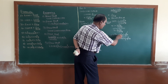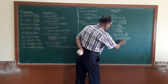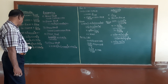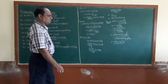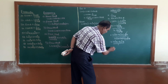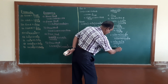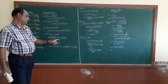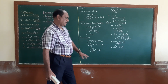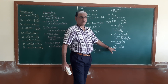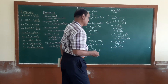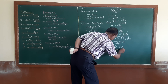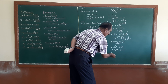So we have cos squared theta minus sine squared theta in the numerator, divided by cos squared theta plus sine squared theta. Since cos squared theta plus sine squared theta equals 1, this simplifies to cos squared theta minus sine squared theta, divided by 1, which equals cos squared theta minus sine squared theta.